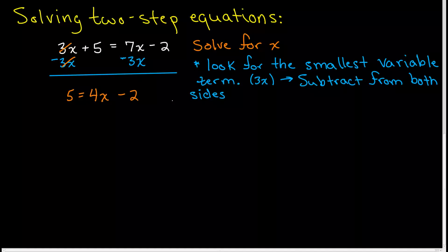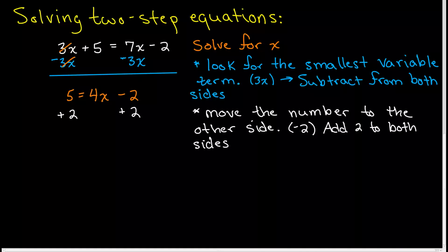We've got 5 equals 4x minus 2. Now we're going to move the number to the other side. All our x's are on this side. We want all the numbers on the other side. We have a minus 2 here. We're going to do the opposite of whatever this sign is, so we're going to add this 2 to both sides. When we do that, this number will always disappear. Negative 2 plus 2 adds up to be 0.